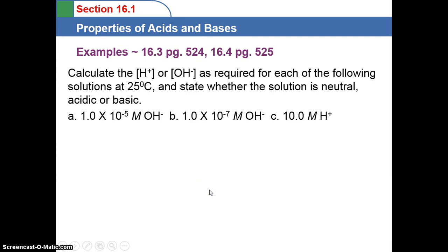Let's take a look at some examples. These are given on page 524 of your textbook and 525. Example 16.3 says to calculate the H+ or the OH- ion concentration as required for each of the following solutions at 25 degrees Celsius, and state whether the solution is neutral, acidic, or basic.